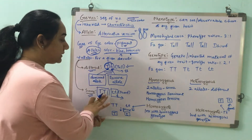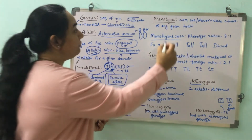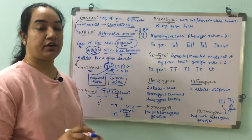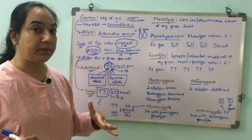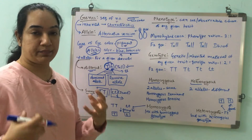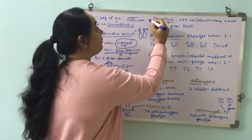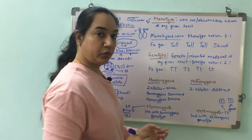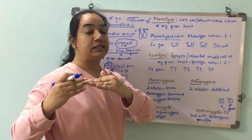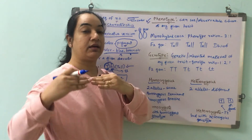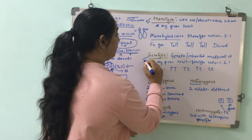From this we get a few more terms: phenotype and genotype. Something that you are seeing — a tall or short plant — something that you are able to observe is what we call phenotype. What you see is phenotype. But the responsible genetic composition behind that is called genotype.